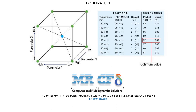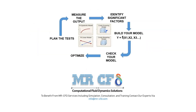The optimization process is a set of steps taken to find the best possible response to the output of the process with the highest return and the lowest cost. The optimization process depends on several factors such as the nature of the process itself and the solution methods.